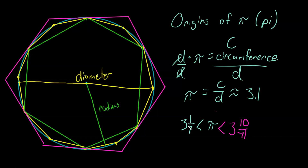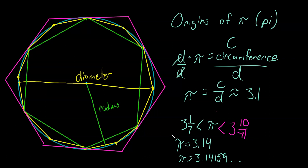Archimedes was extremely accurately able to find the value of pi. So pi as we know it — thanks to people like Archimedes — in seventh-grade math we call pi 3.14. You might see it written as 3.14159 and so on, but it keeps going on forever and ever. It's an irrational number. Thanks to Archimedes and his advanced knowledge of geometry and mathematics, we have pi equals 3.14. That is our video on the origins of pi. I hope you enjoyed and learned something.